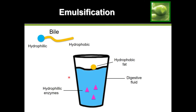Bile can allow hydrophobic substances to mix with hydrophilic ones because it has both hydrophilic and hydrophobic ends. The bile is going to latch onto fat using its hydrophobic end — it cannot attach with its hydrophilic end because the fat would run away from something hydrophilic. Since both the fat and bile's tail are hydrophobic, they are fine attaching to each other.